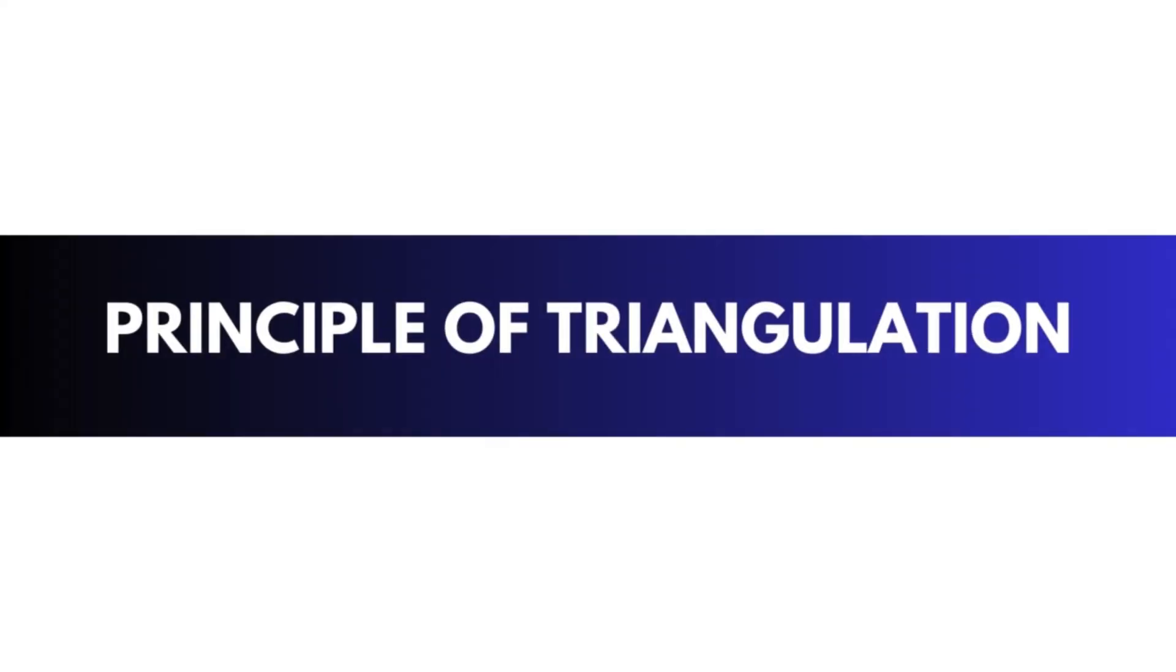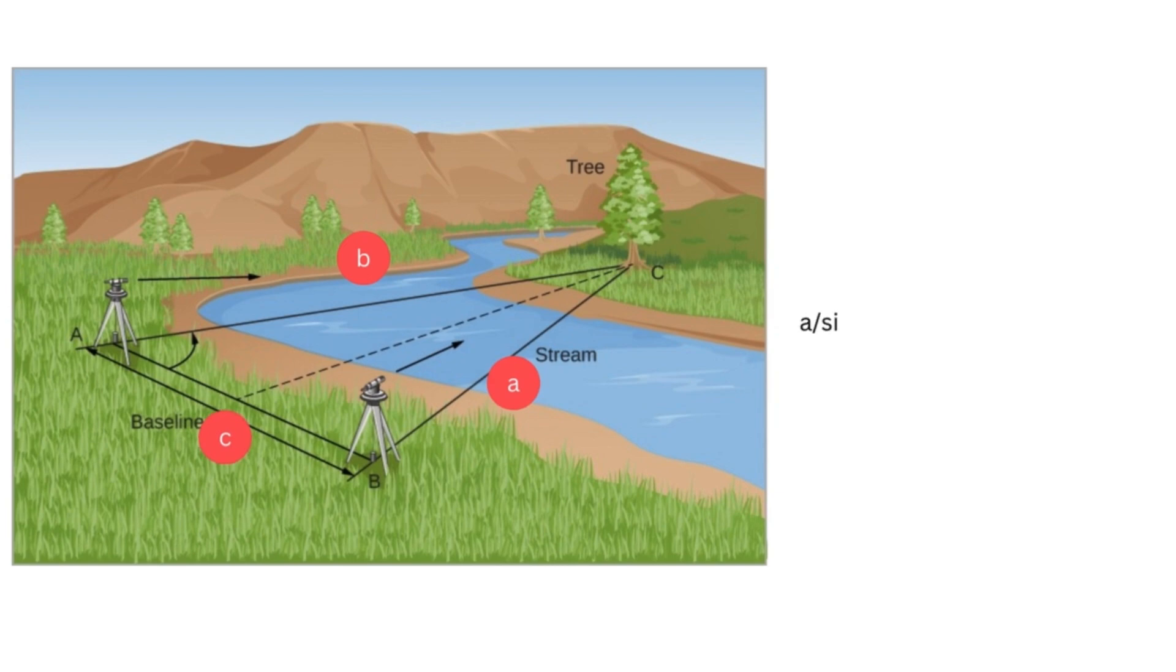Principle of Triangulation in Surveying. The principle of triangulation in surveying is that if one side and three angles are known for a triangle, then the remaining sides can be calculated using the sine rule. In the above figure, if any one side, for example c, and the angles a, b, and c are known, then, as per the sine rule, a divided by sine a equals b divided by sine b equals c divided by sine c.